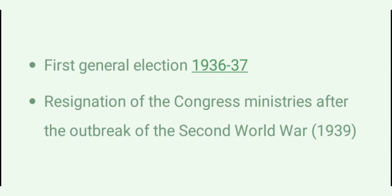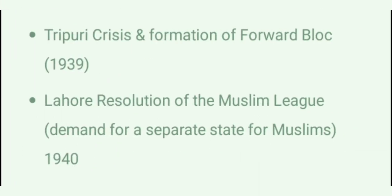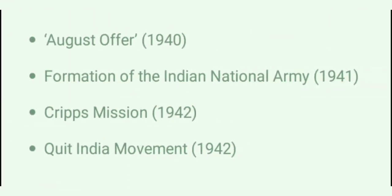Lord Linlithgow, 1936 to 1944. First General Election 1936-37. Resignation of Congress ministers after the outbreak of Second World War 1939. Tripuri Crisis and formation of Forward Bloc 1939. Lahore Resolution of Muslim League — demand for separate states for Muslims 1940. August Offer 1940. Formation of Indian National Army 1941. Cripps Mission 1942. Quit India Movement 1942.